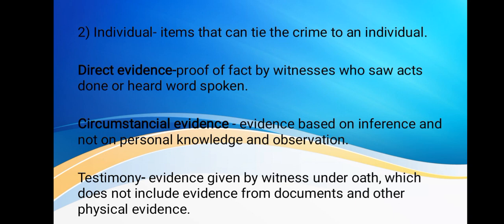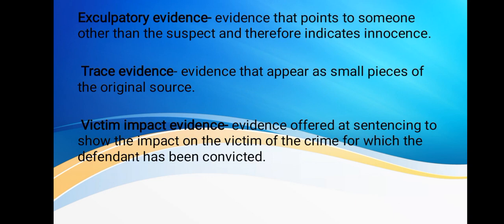Circumstantial evidence only suggests an association with a past occurrence that was not observed by an eyewitness. Another category is testimony — evidence given by a witness; it does not include evidence from documents or other physical evidence. We also have exculpatory evidence, which points to someone other than the suspect and therefore indicates innocence.